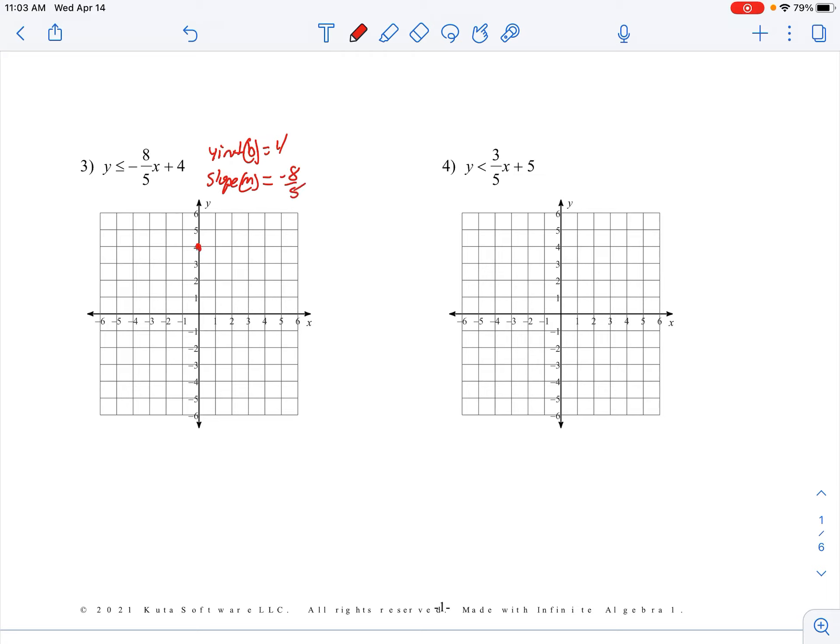So the y-intercept is at 4. Play the slope game. Let's go down 8, make sure we can count, right 5. Best I can do. Take your ruler, make a solid line as we know it's or equal to, and then we're going to shade it below that line because it is less than. Anything that is in the shaded region and also on the solid boundary line is a solution.